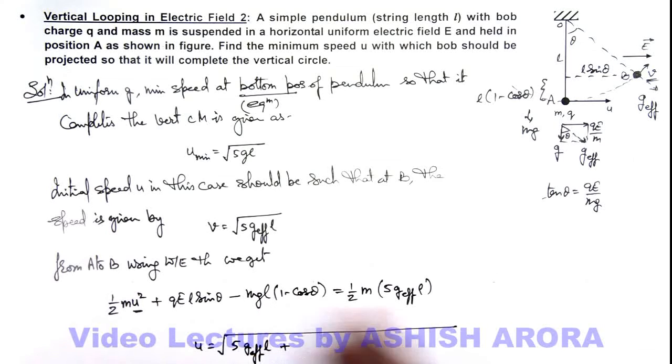This we can write as here 5 g effective into l plus this term if we take on the other side. We can take this 2 on the other side, this is equal to gl times 1 minus cos theta. You can see, I have divided this whole equation by m.